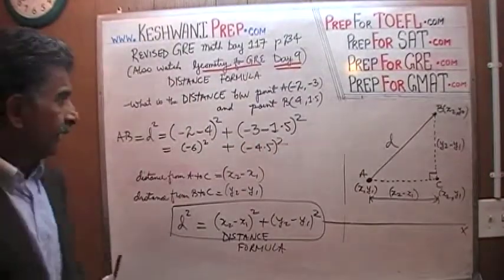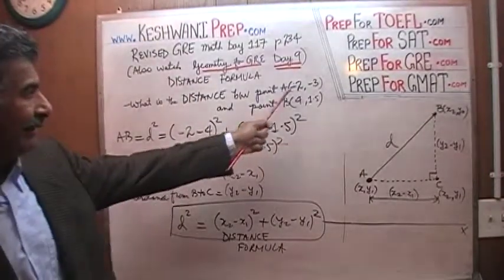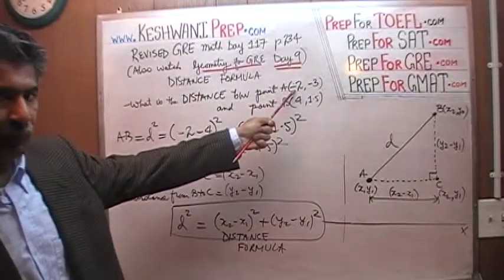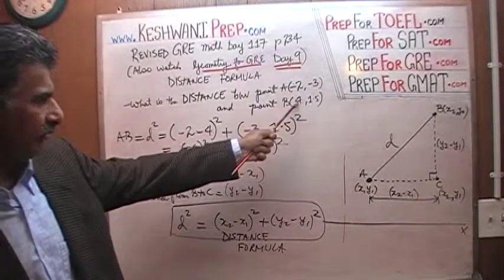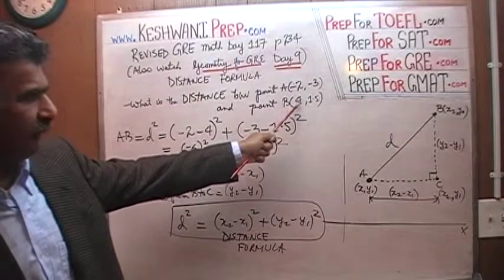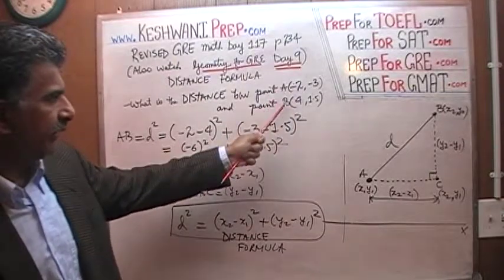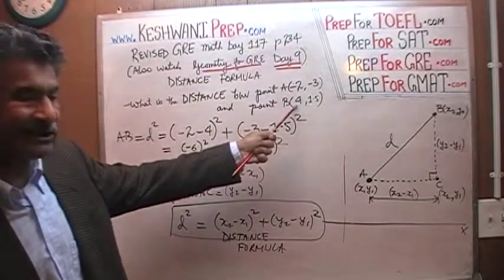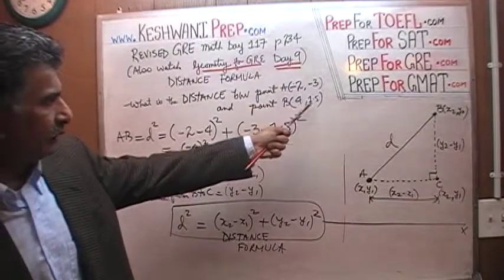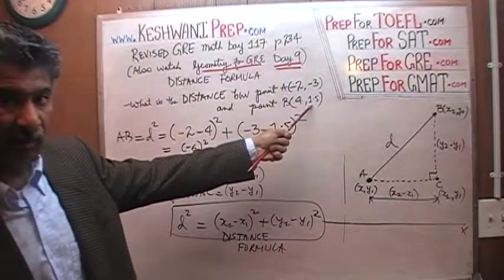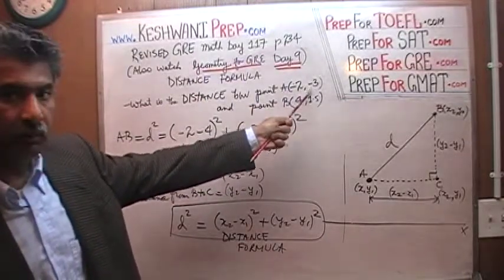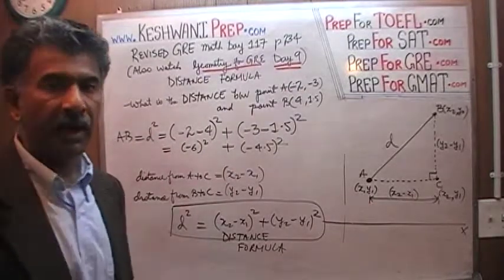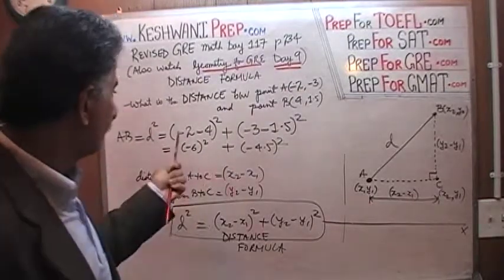What would have happened if instead of calling negative 2 our x2 we had called it x1, and gone from B to A? In that case, 4 would be our x2 and 1.5 our y2. Would it matter? The answer is no, because we are squaring the quantity.